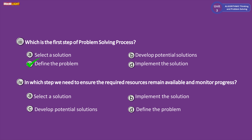Question four: to ensure required resources remain available and monitor progress, which step do we follow? The options are: A select a solution, B implement the solution, C develop a potential solution, D define the problem. The correct answer is option B, implement the solution.